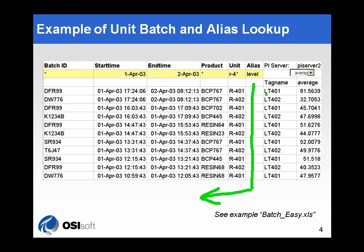What you're seeing over here are the mappings that we've made by matching this alias name and this unit name. By doing a simple match between that alias and the unit, we can find the corresponding tag name. When we look at this particular unit and compare it to this alias here — 'level' — we come up with this tag name. As you can see, it's different than the other tag name. These tag names are not part of the batch database. However, making use of the aliases that are associated with these batch units, we can associate a specific PI tag with a specific unit. That's how we make the connection to the real-time data.